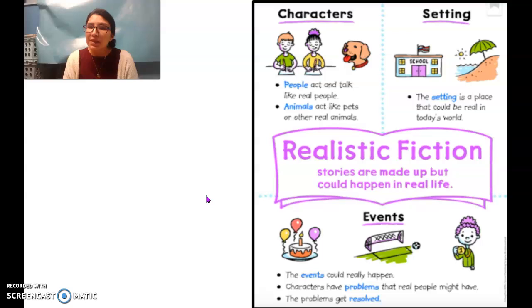So characters: people act and talk like real people. Animals act like pets or other real animals. The setting: the setting is a place that could be real in today's world. And then events: the events could really happen. Characters have problems that real people might have. For example, maybe you lost your pencil. That's a real problem that someone could have. Then the problems get resolved.